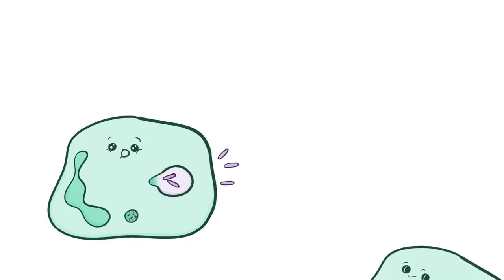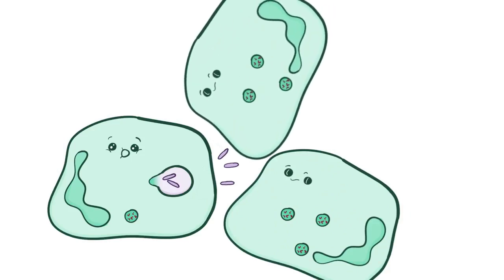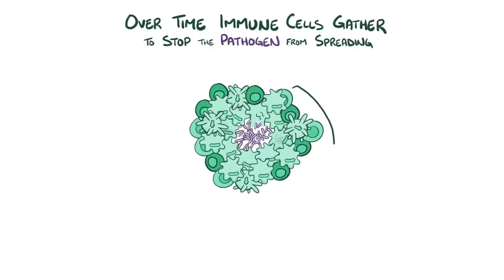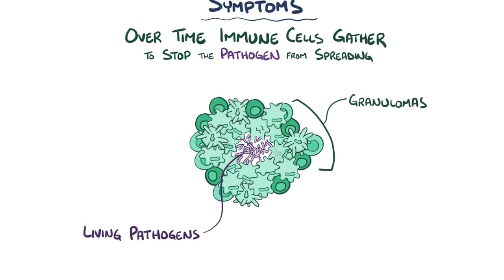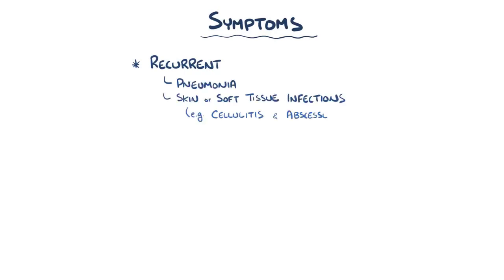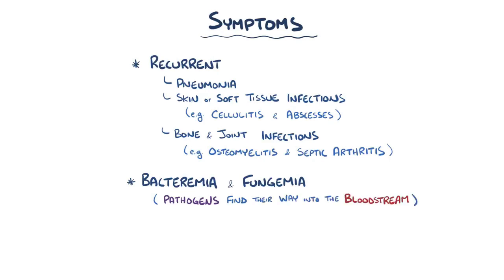Pathogens that don't get killed linger within phagocytes and occasionally break free, and over time that attracts even more phagocytes that engulf the pathogens, as well as other immune cells like T-lymphocytes. Over time, these immune cells gather up to stop the pathogen from spreading, forming little clusters called granulomas that have phagocytes in the center with living pathogens inside them. Symptoms of chronic granulomatous disease include recurrent pneumonia, recurrent skin and soft tissue infections like cellulitis and abscesses, bone and joint infections like osteomyelitis and septic arthritis, as well as bacteremia or fungemia, where pathogens find their way into the bloodstream.